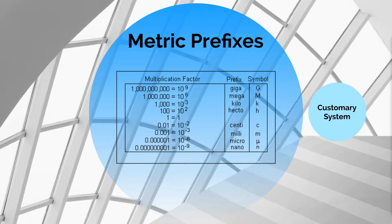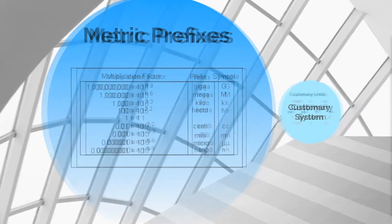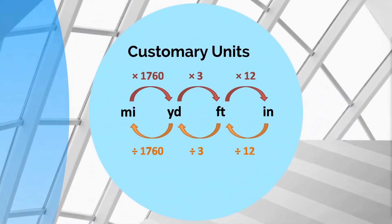Next, we'll move on to discussing the customary system. The most common customary conversions on the SAT are going to be miles, yards, feet, and inches. Try to be familiar with these conversions.